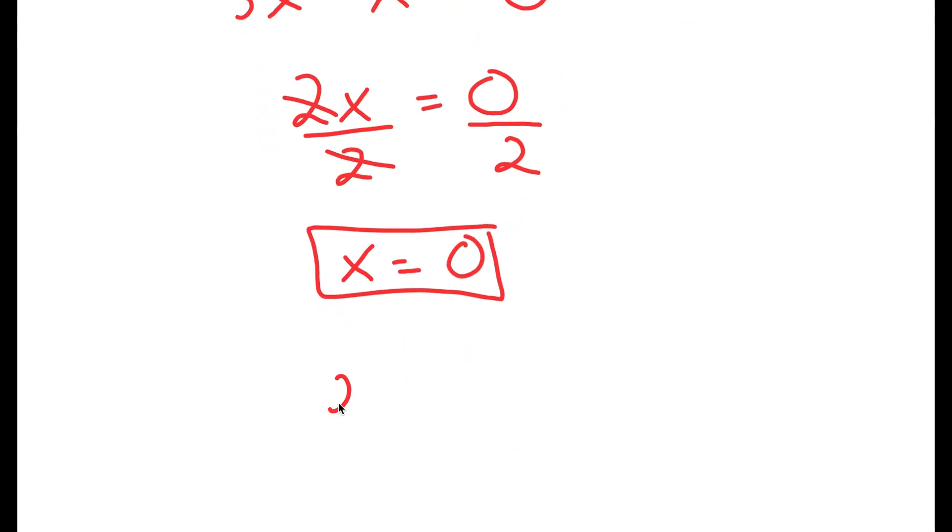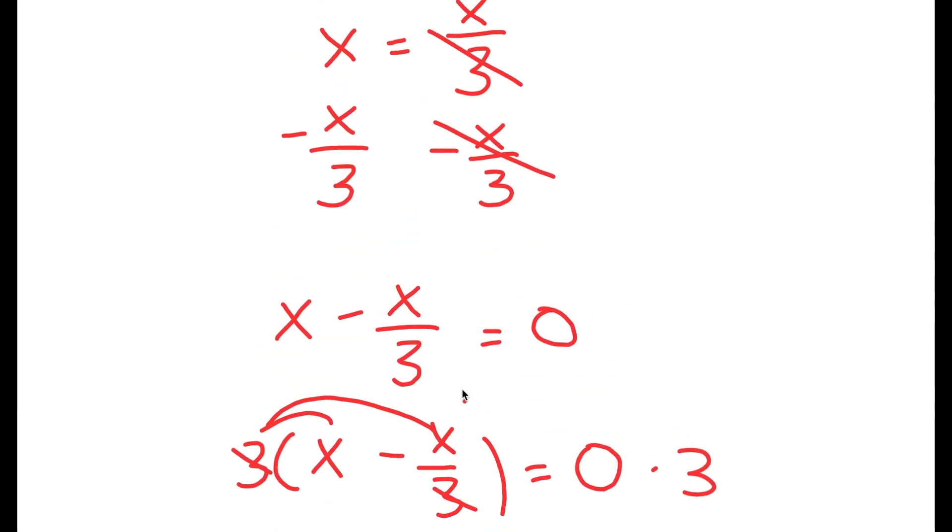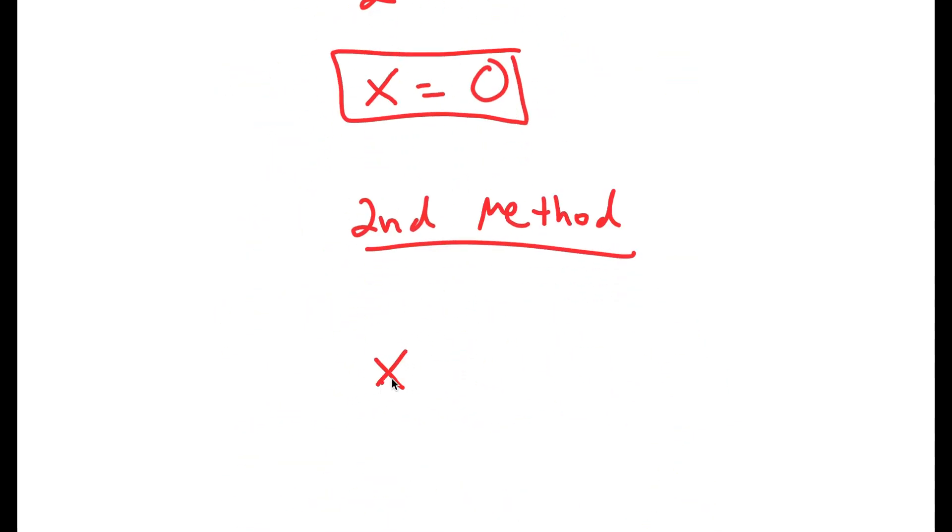Now before you leave, I actually have a second method to solve this, which is faster than the first method and more efficient. So again, my equation is x equals x over 3.